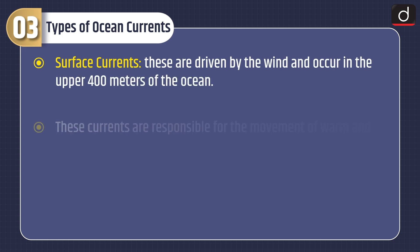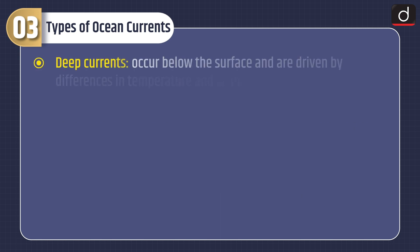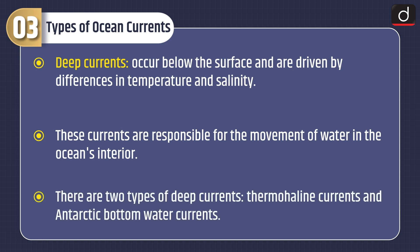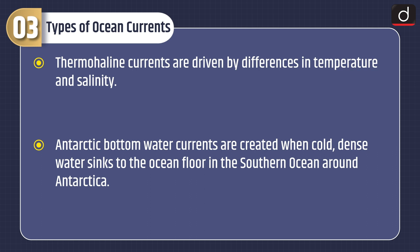Moving on to types of ocean currents. Surface currents are driven by the wind and occur in the upper 400 meters of the ocean, responsible for the movement of warm and cold water around the globe. The North Atlantic Current flows from the Gulf of Mexico to the North Atlantic Ocean, bringing warm water to the coast of Europe. Deep currents occur below the surface, driven by differences in temperature and salinity. There are two types: thermohaline currents and Antarctic Bottom Water currents. Antarctic Bottom Water currents are created when cold, dense water sinks to the ocean floor in the Southern Ocean around Antarctica.